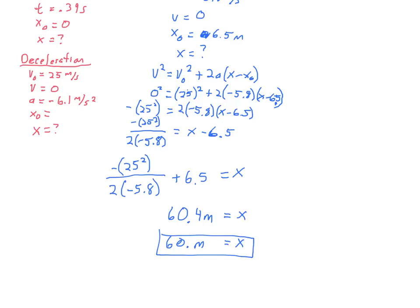All right, so once I substitute in my variables, I manipulate around. I subtracted the 25 squared to the other side. Notice the squares inside the parentheses here to indicate I'm negative. I hit a negative with whatever the 25 squared is. Divide the two times negative 5.8 over. Add my 6.5. I come out with, using sig figs, 60 meters, which is a reasonable answer for a car moving at 25 meters per second.